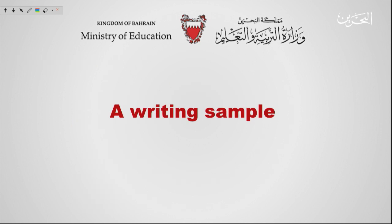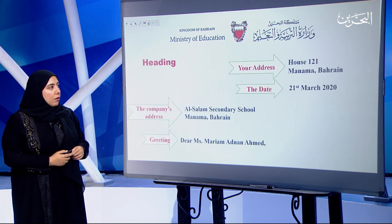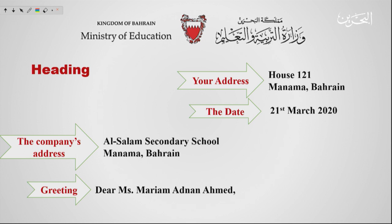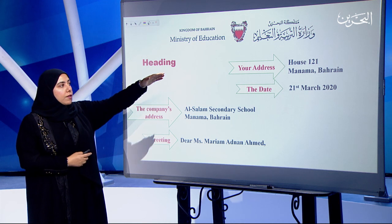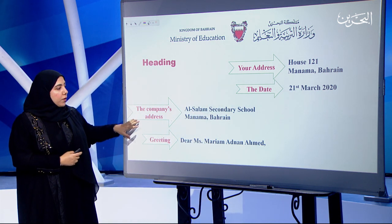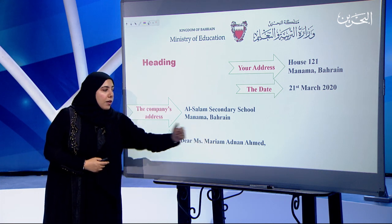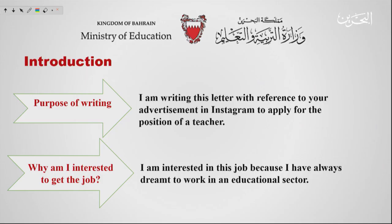Here is a writing sample — we'll go through it and clarify every point. Your address and the date go on the top right: for example, House 121, Manama, Bahrain, dated 21st of March 2020. Then the company's address: Assalam Secondary School, Manama, Bahrain. Greeting: Dear Ms. Maryam Adnan Ahmed. Introduction — purpose of writing: 'I'm writing this letter with reference to your advertisement on Instagram to apply for the position of a teacher.' Why am I interested: 'I'm interested in this job because I have always dreamt to work in an educational sector.'